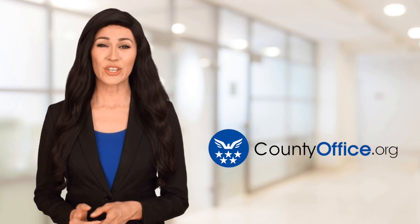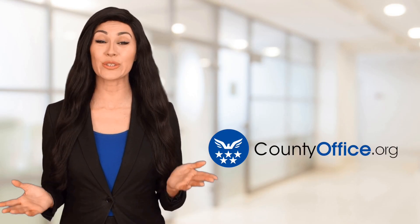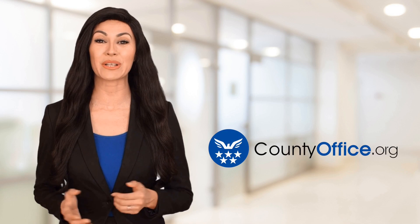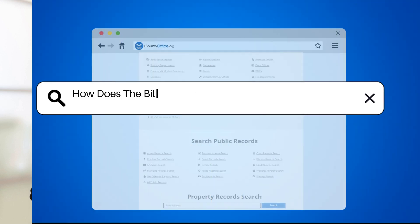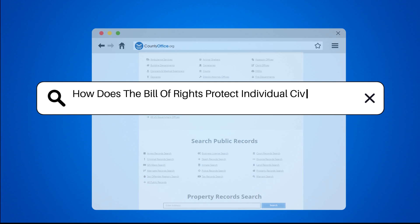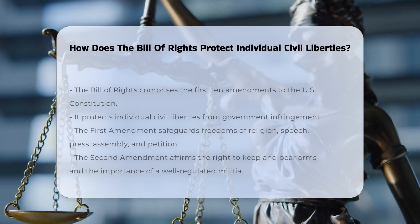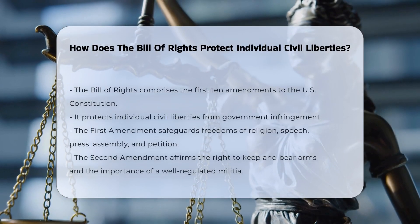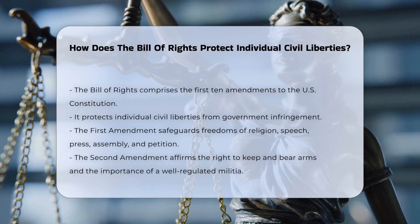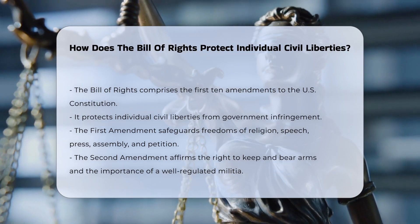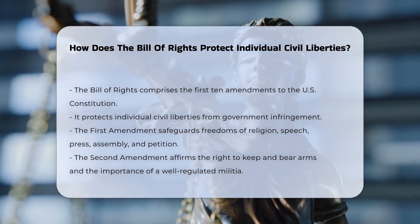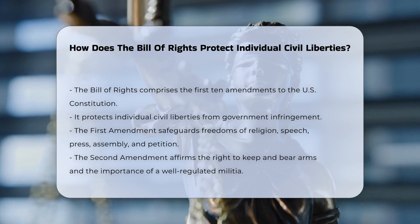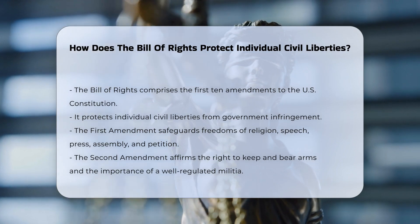Welcome to County Office, your ultimate guide to local government services and public records. Let's get started. How does the Bill of Rights protect individual civil liberties? The Bill of Rights, the first 10 amendments to the U.S. Constitution, plays a crucial role in safeguarding individual civil liberties against government infringement. Here's a detailed look at how it achieves this.